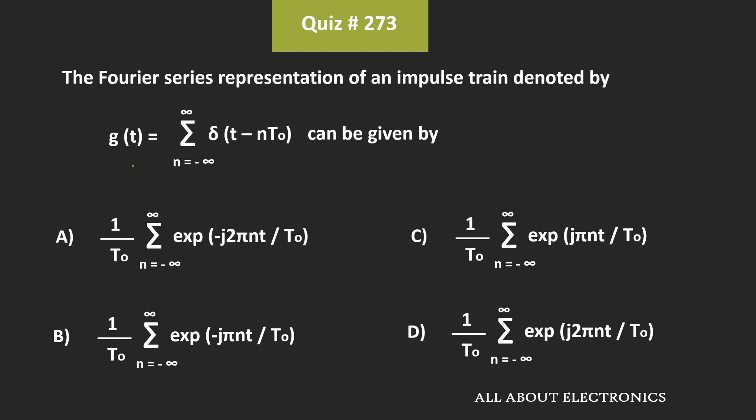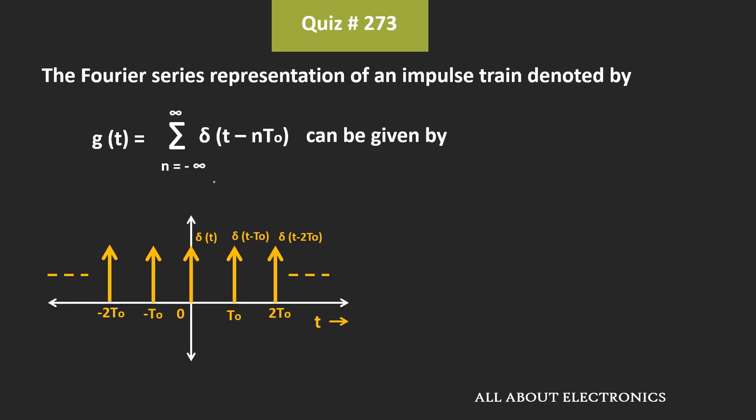So here, we have been asked to find the Fourier series representation of this signal. So graphically, this impulse train can be represented like this.